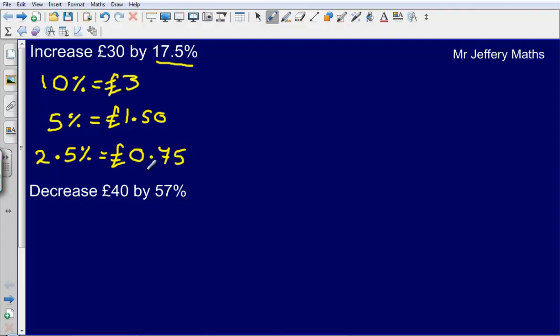Now by working out these building blocks what I could say is that here if I added all of these together what I'll have is 17.5%. So my 17.5% here is simply going to be these numbers added together. So I've got £3.00 plus £1.50 which gives me £4.50. Add on my 75p and so that gives me in total £5.25.